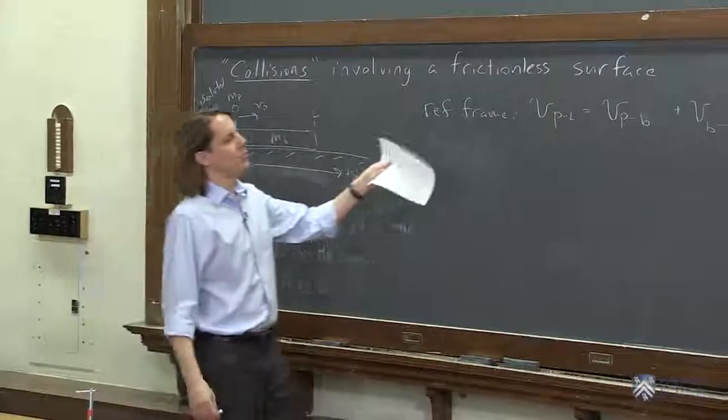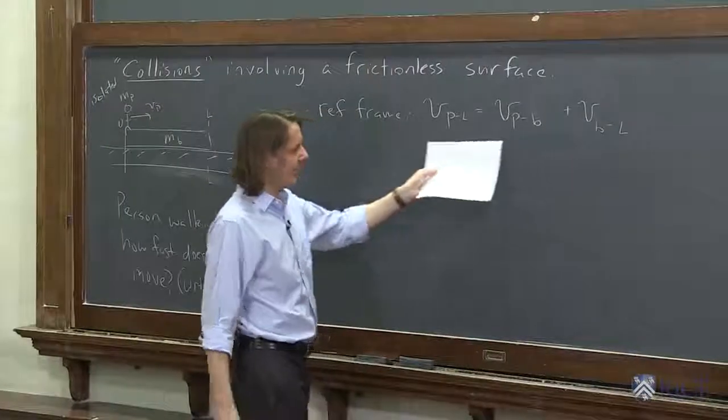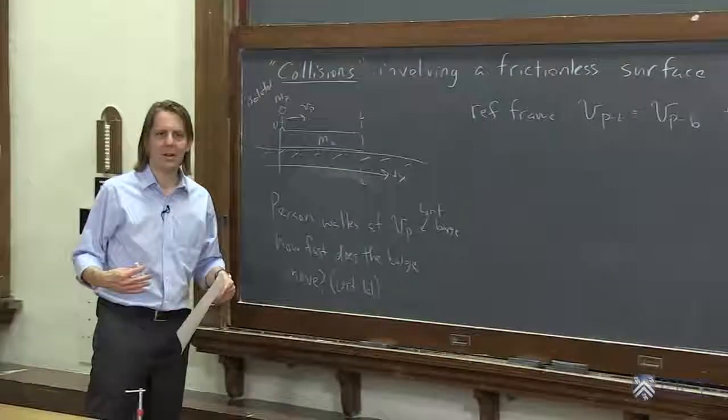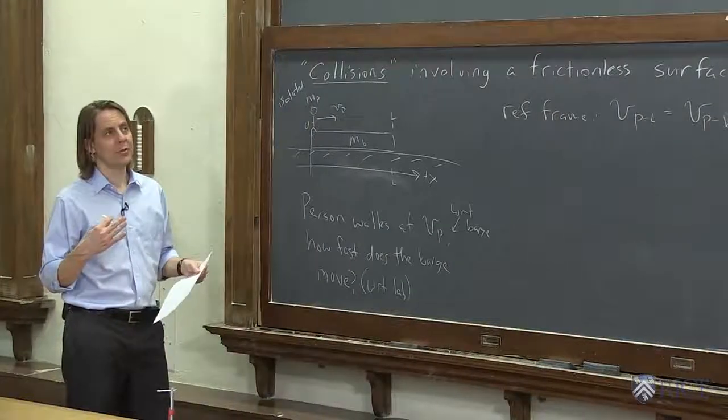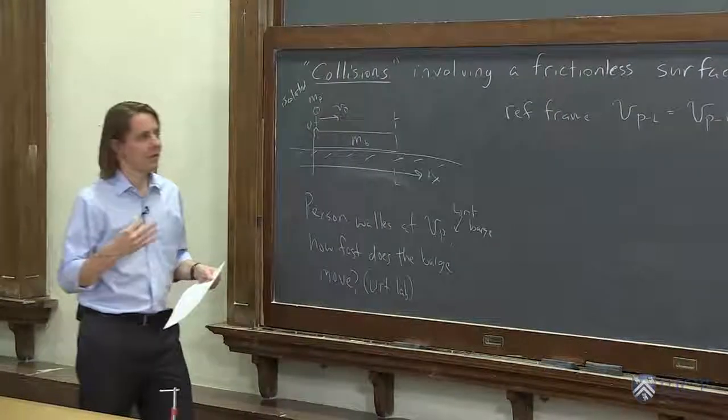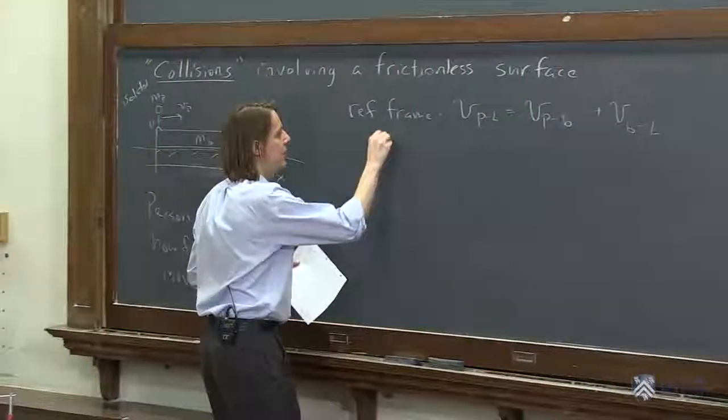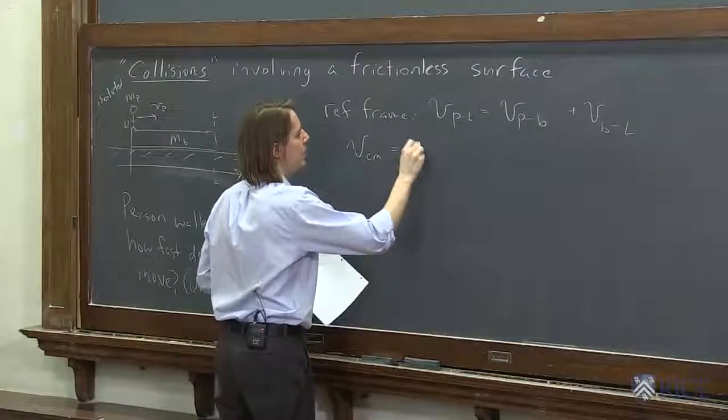But this isn't what we're going to use to solve the problem. We need this, but we also need to remember this is a collision of bodies in an isolated system. Therefore, the center of mass does not move. So we want to say the velocity of the center of mass is zero.